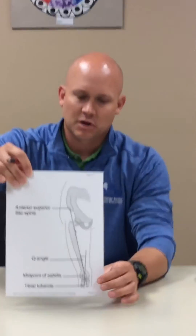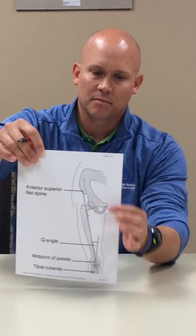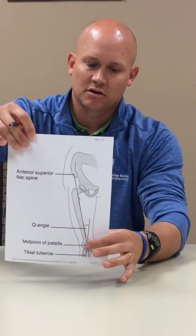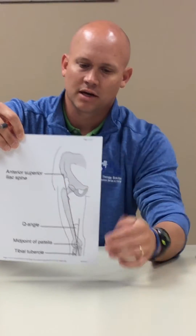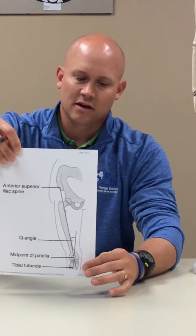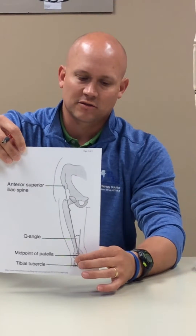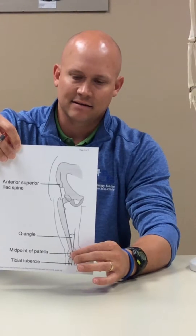A Q-angle is a measurement in our leg that we use to determine some pressures that can be placed on the knee. The Q-angle is this measurement here — a line drawn from a point in the pelvis to your kneecap, and also from the kneecap out to your hip. This angle helps to determine the amounts of stress or pressure on that knee.